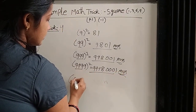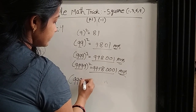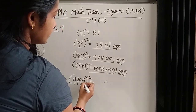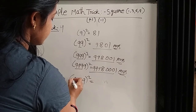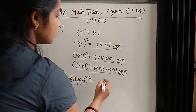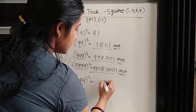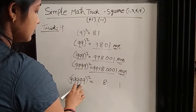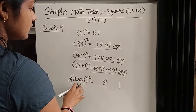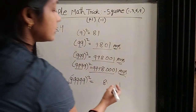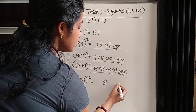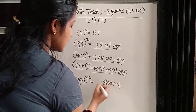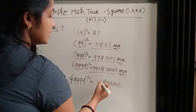Suppose there is 5 9: same process. 9 square is 81. And the rest are four 9s. So we write 40 here. For 4 9 and 4 9.